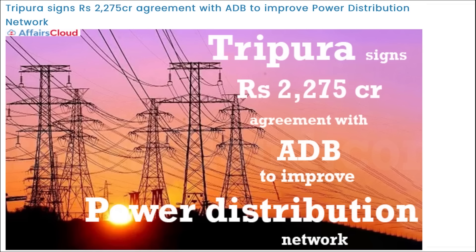Tripura signed a ₹2275 crore rupees agreement with the Asian Development Bank to improve the power distribution network. The Asian Development Bank will support the state government's efforts to strengthen the power sector by replacing inefficient power plants and strengthening the distribution system.